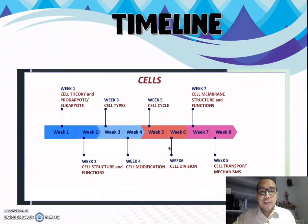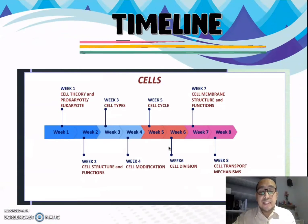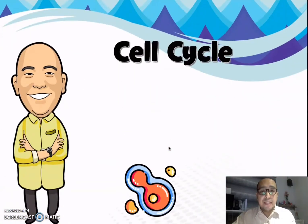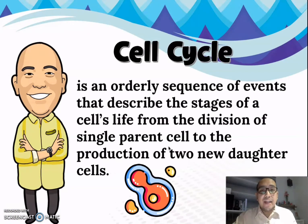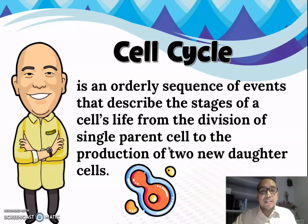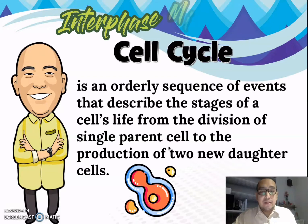For our timeline, we are now in week 5, which covers the cell cycle. The cell cycle, from the word 'cycle,' is a never-ending, orderly sequence of events that describes the stages of a cell's life — from the division of a single parent to the production of two new daughter cells. The cell cycle consists of two phases: the interphase and the mitotic phase.